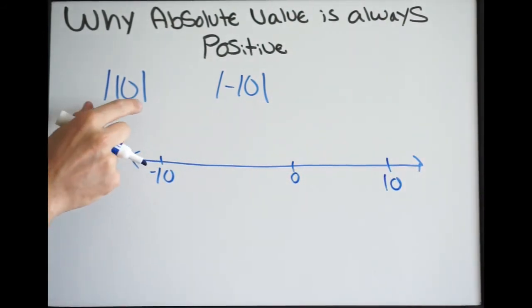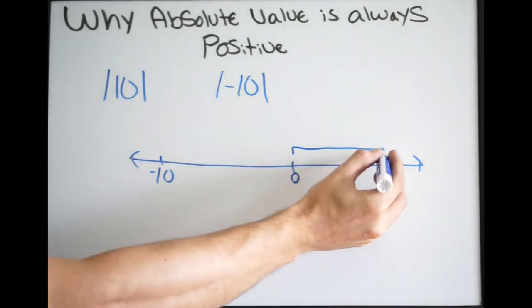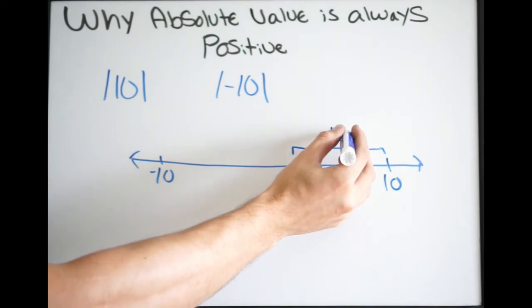So again, it wants to know what is the distance 10 is from the origin, or 0. In this case, that's going to be a distance of 10, positive 10.